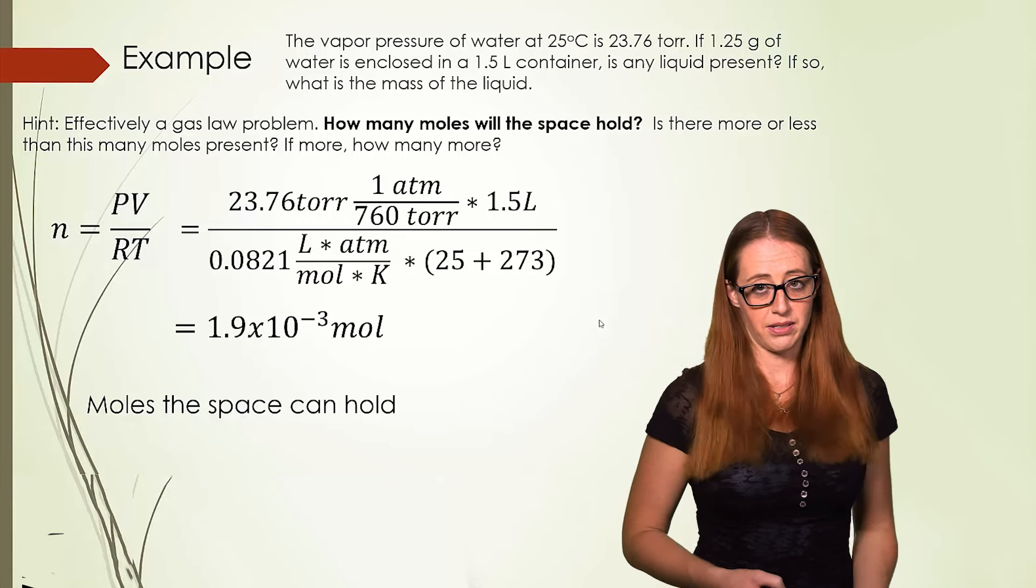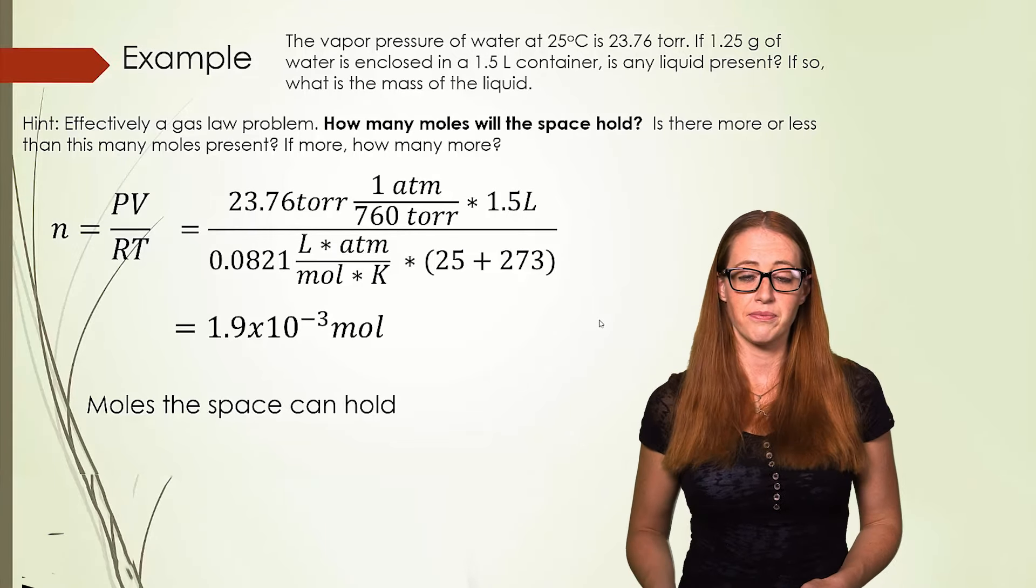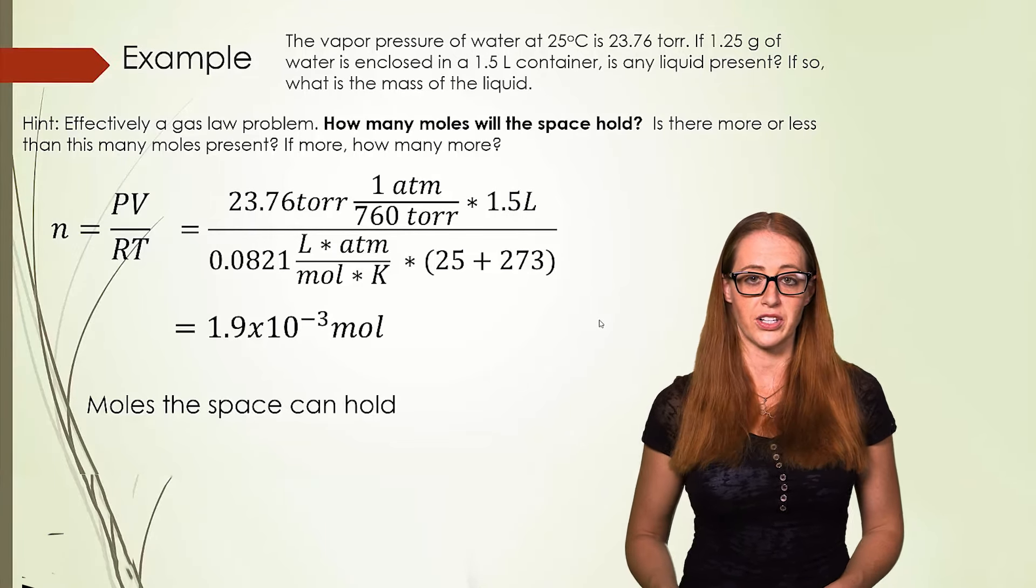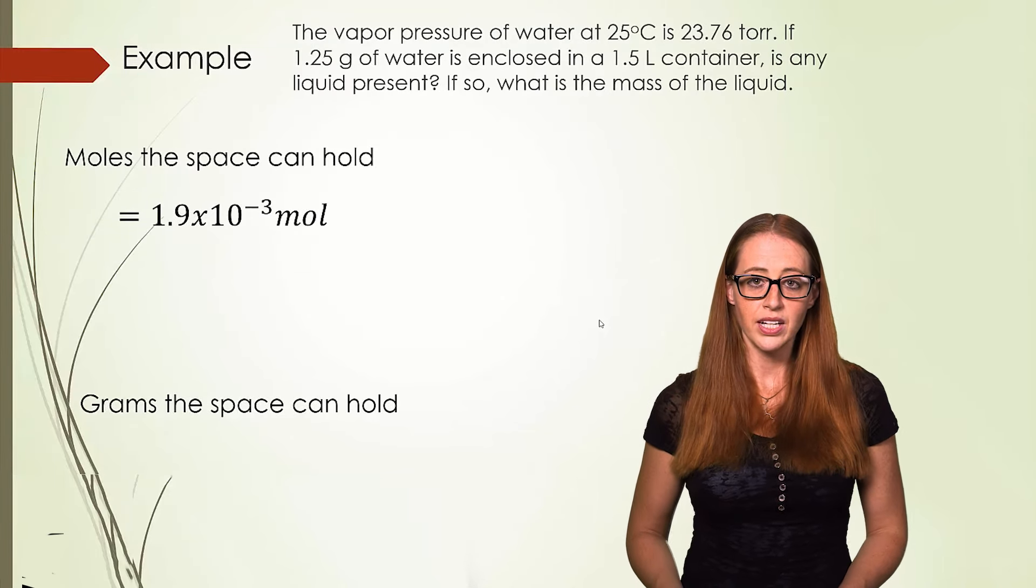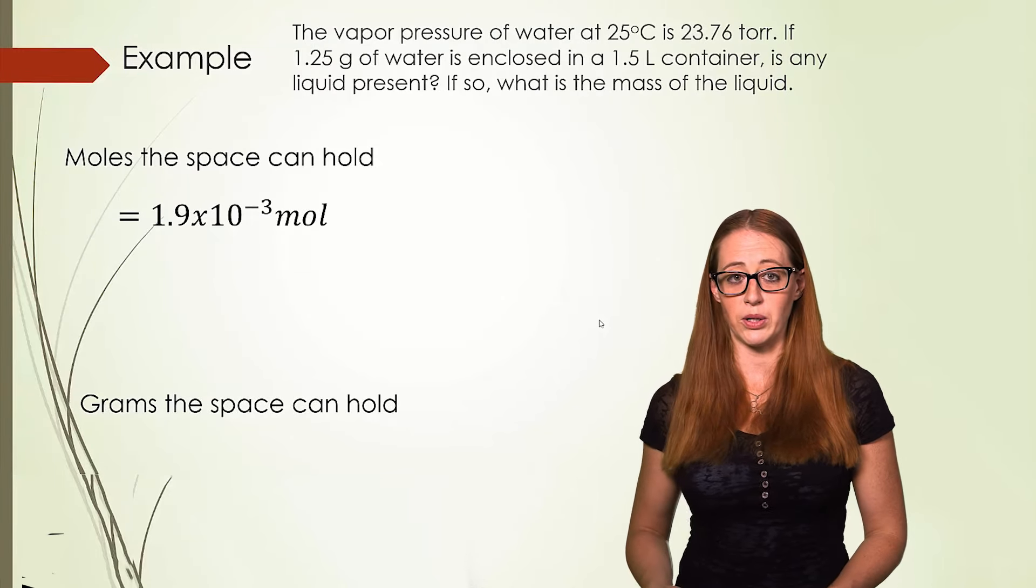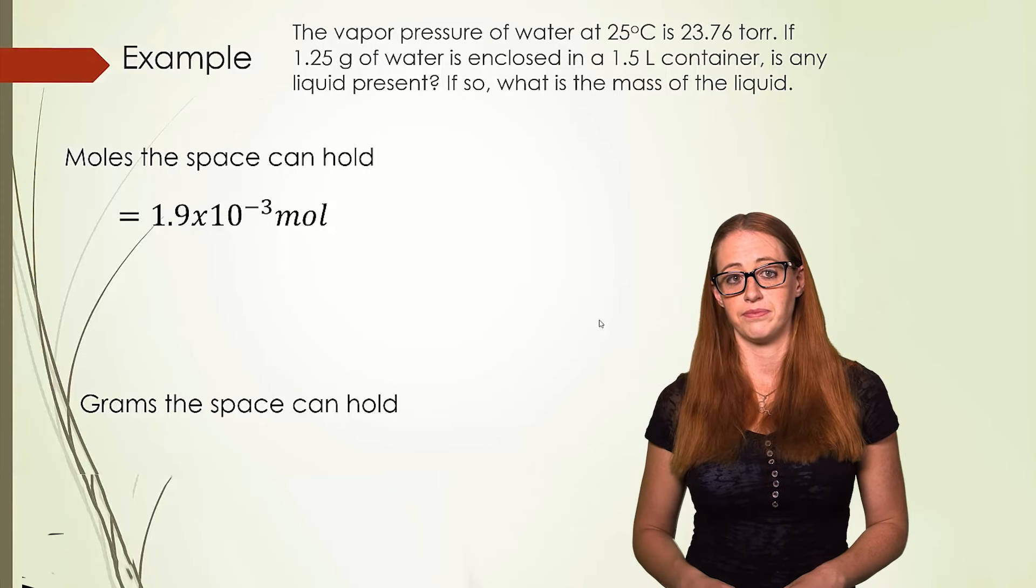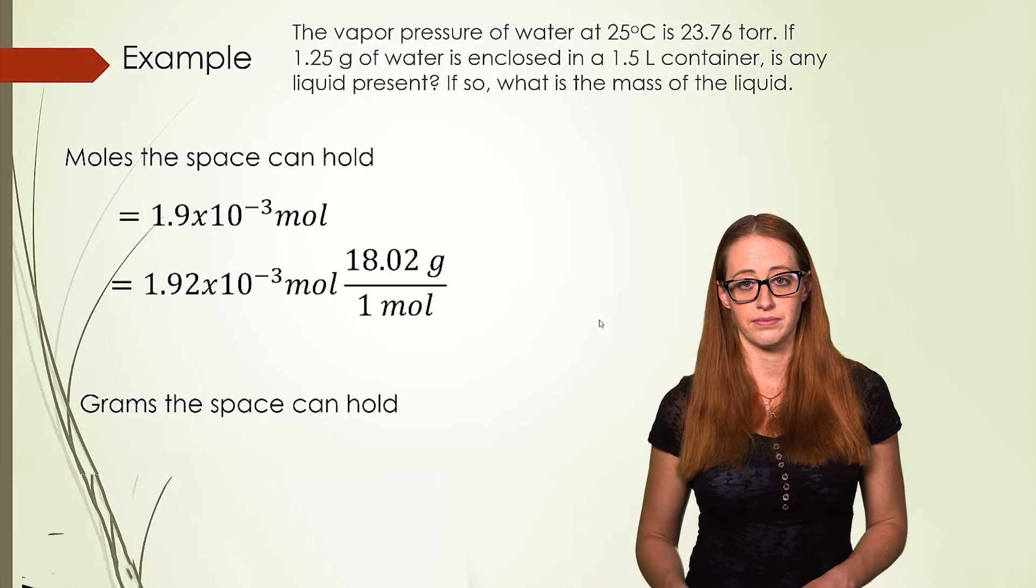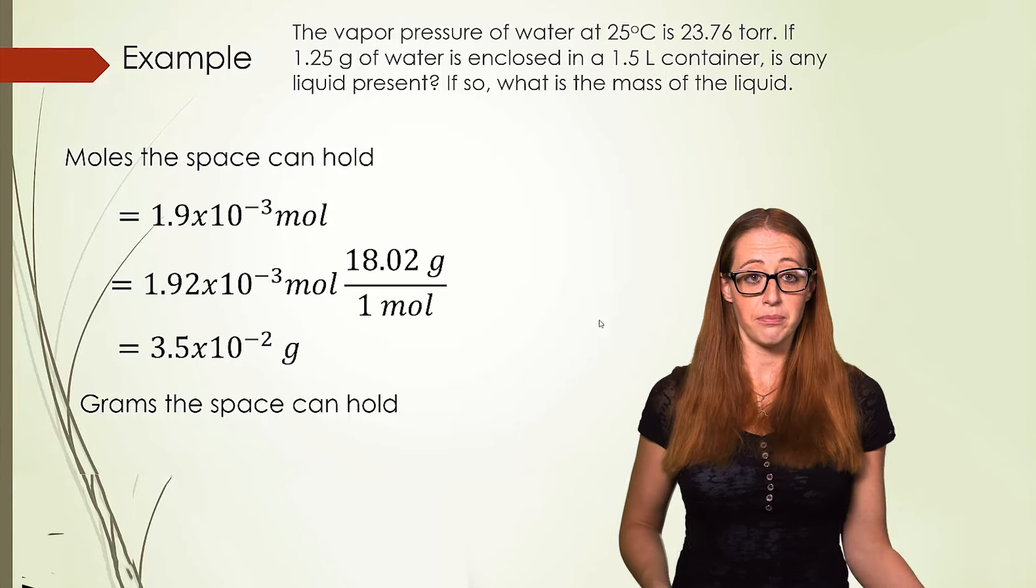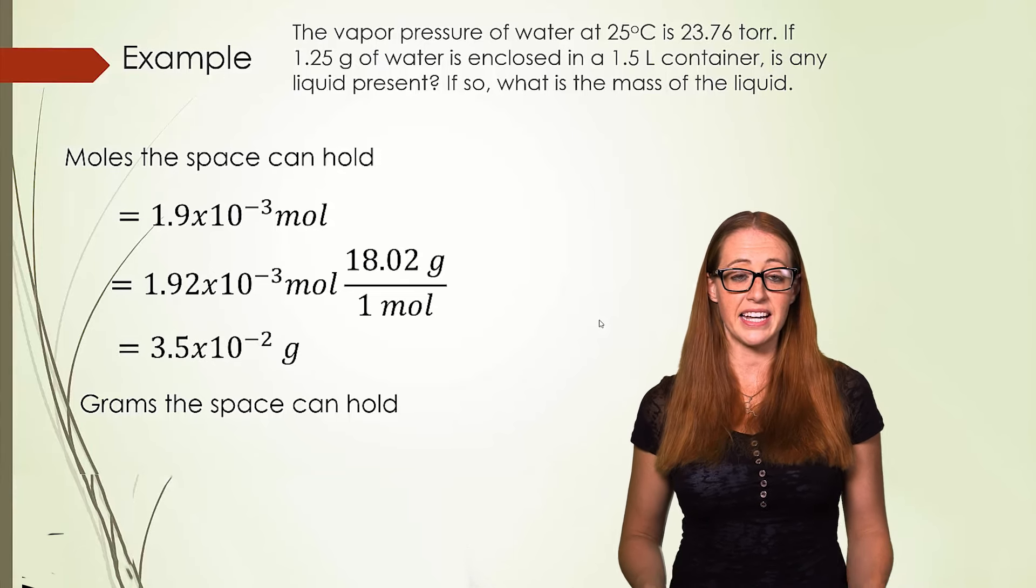We want to compare this to the initial amount of sample, which was given in grams. So let's do one more step and convert this to grams. To figure out the grams that the space can hold, we're simply going to convert between the moles of water into the grams of water. From here, we get 3.5 times 10 to the negative 2 grams.